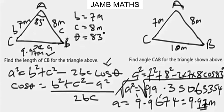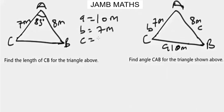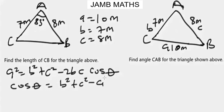Now let's solve this second question. For this second question, let's label the triangle sides a, b, and c. Our a is 10 meters, our b is 7 meters, and our c is 8 meters. We're going to apply cosine rule but use the second form: cosθ = (b² + c² − a²) / 2bc.